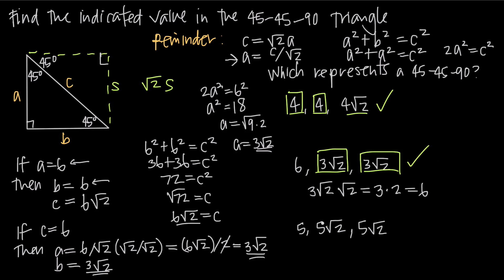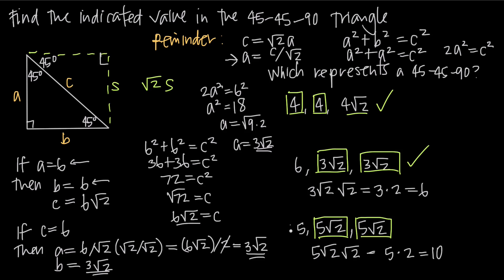In the last example, we have two equal side lengths — 5 root 2 and 5 root 2 — so these must be the legs. The third side must be the hypotenuse: 5 square root of 2 times square root of 2 equals 5 times 2, which equals 10. But 10 does not equal the third side length of 5, so these three side lengths do not represent a 45-45-90 triangle. The hypotenuse would have to be 10 for this to be a 45-45-90. That's how you use what we know about 45-45-90 triangles to solve problems like these.